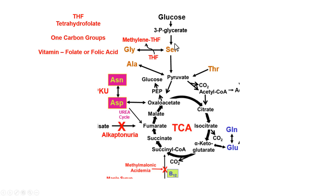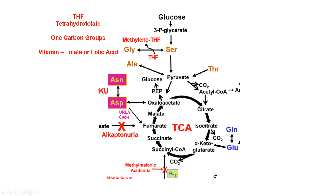Glucose can be used to make serine. Serine can give up a methyl group to tetrahydrofolate (THF), which is the vitamin folate or folic acid — an acceptor and donor of one-carbon groups. Those methyl groups can be used to make glycine and methylene-tetrahydrofolate. Serine can then go to pyruvate; pyruvate can go to alanine. Threonine, an essential amino acid, is also broken down into pyruvate. Asparagine can go to aspartate via asparaginase, releasing ammonia; aspartate can enter the urea cycle or be converted back to oxaloacetate via fumarate in the TCA cycle.